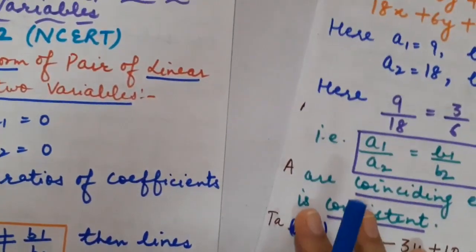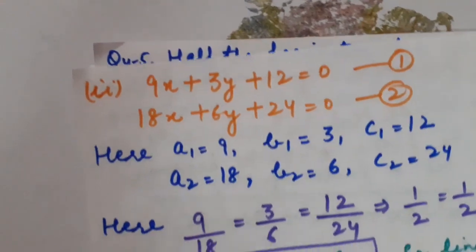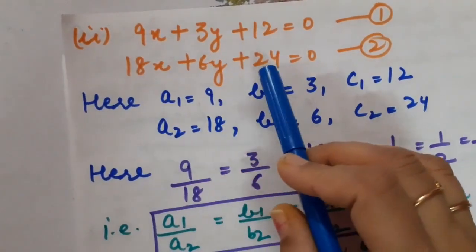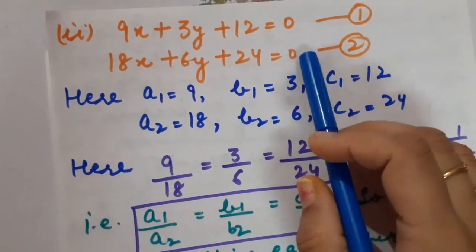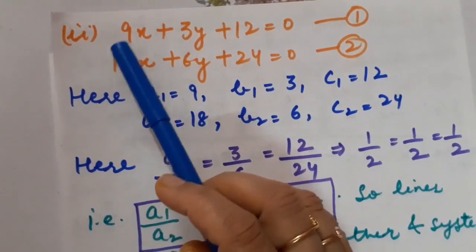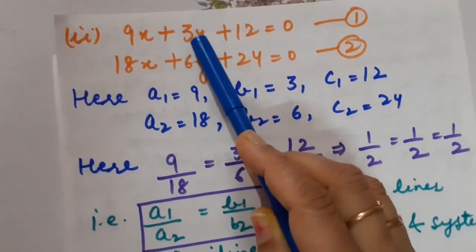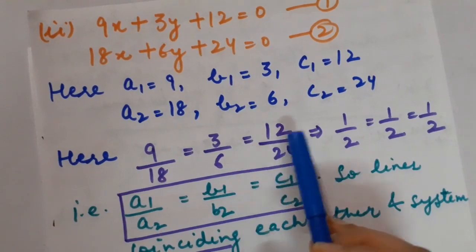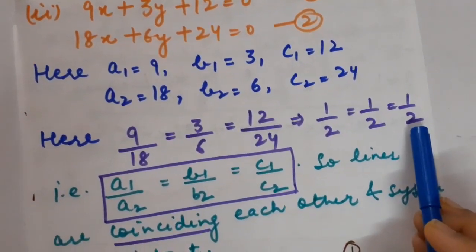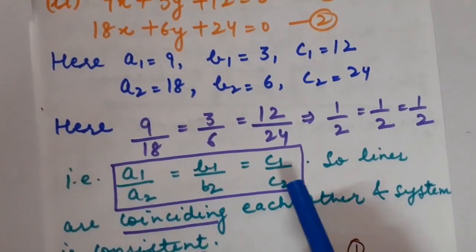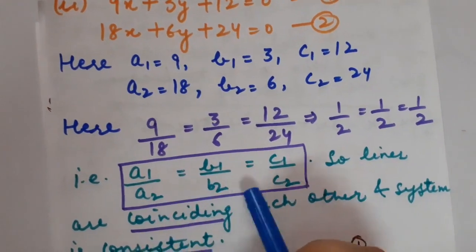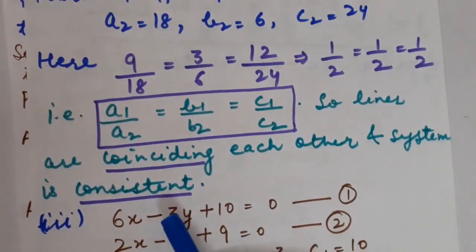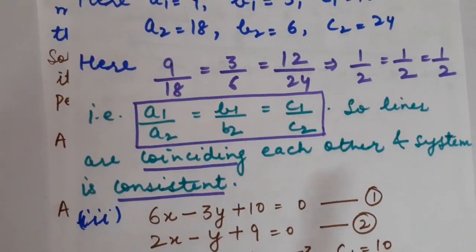Second part: 9x + 3y + 12 = 0 and 18x + 6y + 24 = 0. Comparing: a1 = 9, a2 = 18, b1 = 3, b2 = 6, c1 = 12, c2 = 24. Now 9/18 = 3/6 = 12/24, all equal to 1/2. So a1/a2 = b1/b2 = c1/c2. The lines are coinciding each other and the system is consistent with infinitely many solutions.